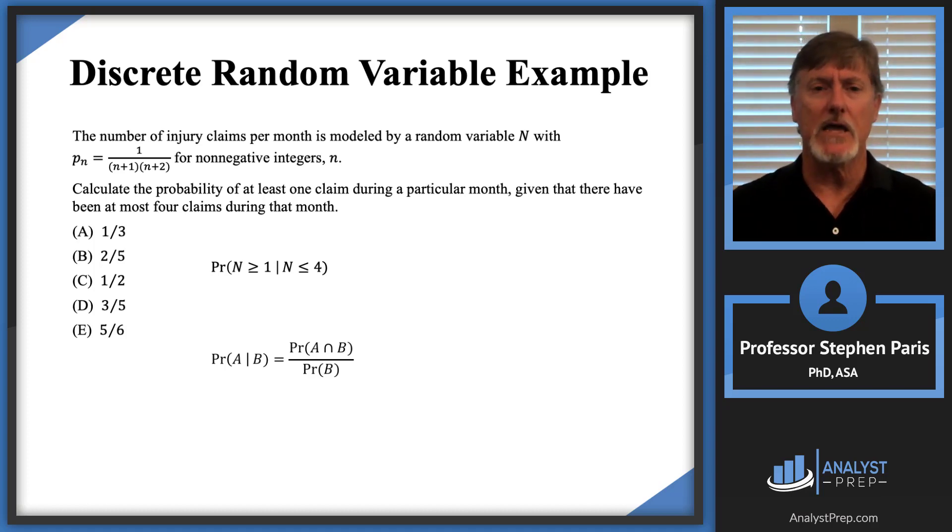It's calculated as a ratio. In the numerator is the probability of A and B, and in the denominator is the probability of B. So I'm just going to apply this fact from the first module on general probability.